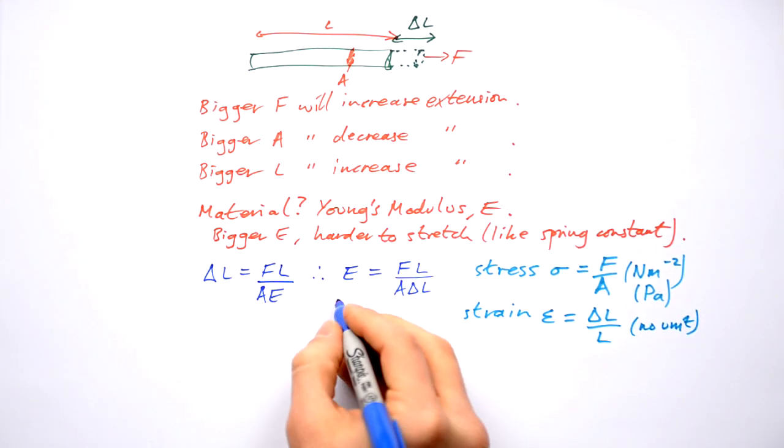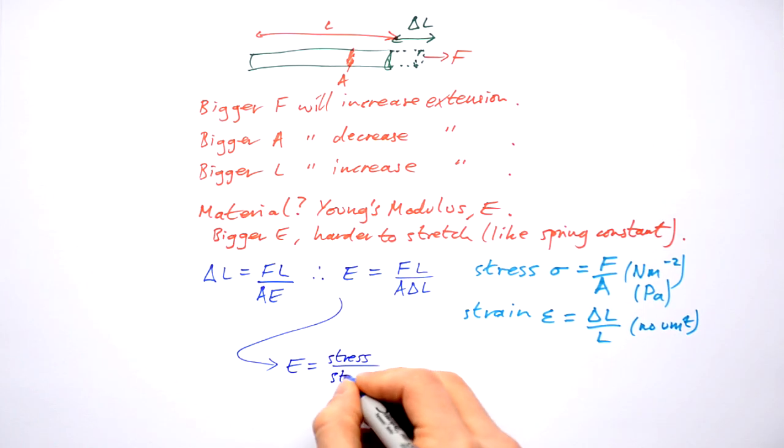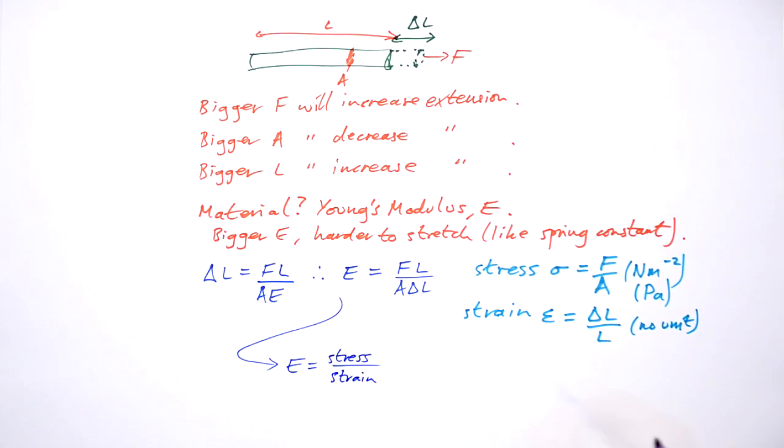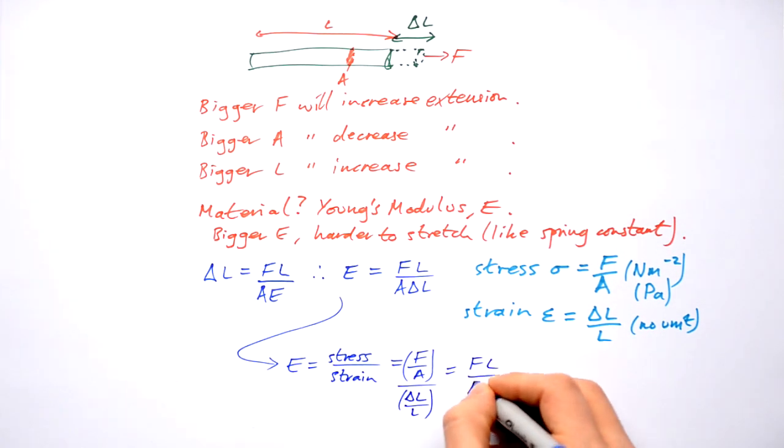So it turns out that the Young's modulus of material can be calculated using these two things here: stress over strain. So that's equals to the stress divided by the strain. Putting these two fractions together, we end up with our equation that we have above.